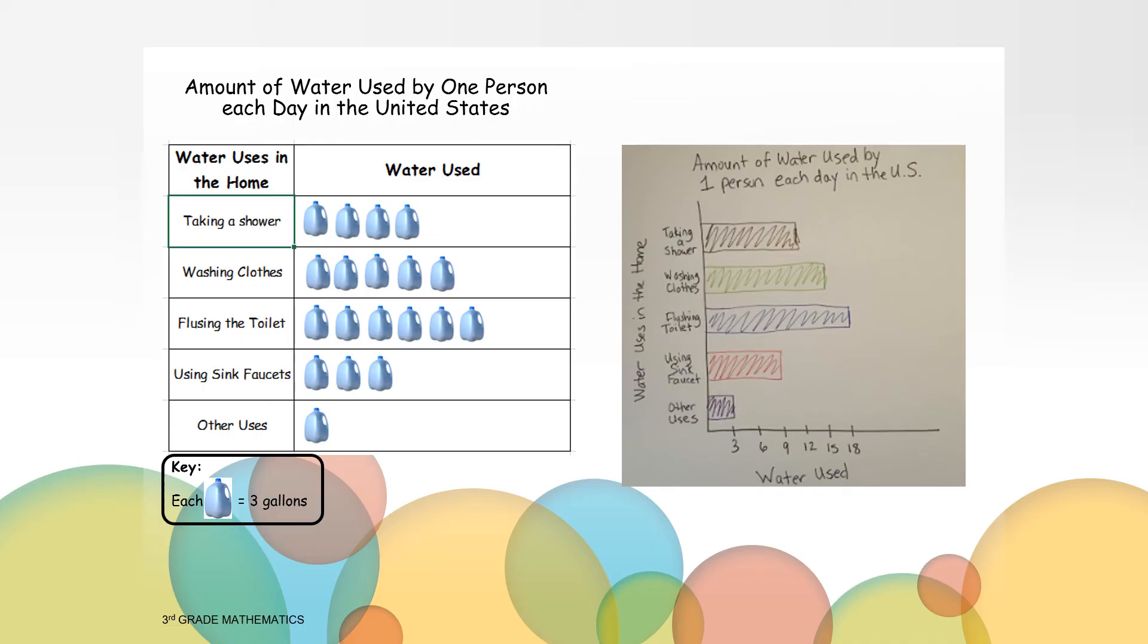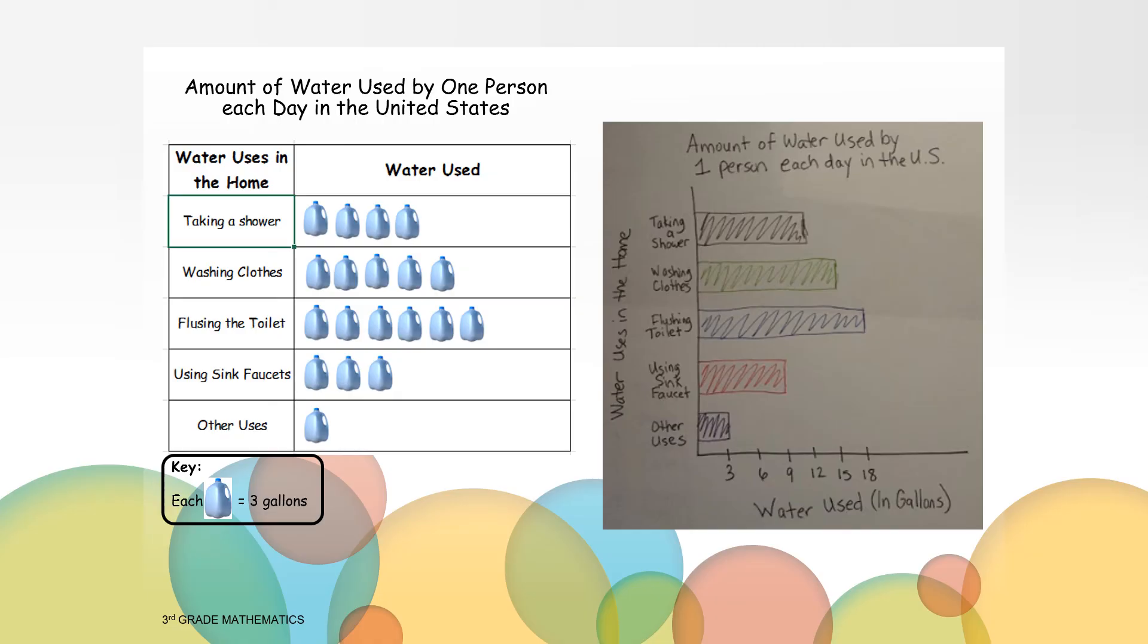Yes, our bar graph does not tell us what the numbers mean. Are we measuring the water in pints, quarts, liters? What measurements are we using to measure the water in our graph? We need to add gallons to our graph. Let's add it to our label of water used. You can add in gallons in parentheses next to the water used. Now we know that the numbers represent the gallons of water. Great job making your bar graph!